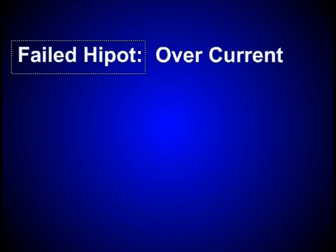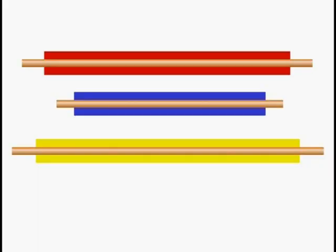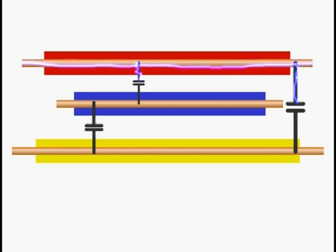What does overcurrent mean? All cables have capacitance between each of the wires. When one wire is charged up to a higher voltage, a small amount of inrush current flows from the wire being charged.